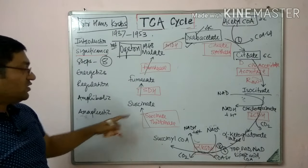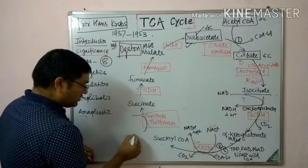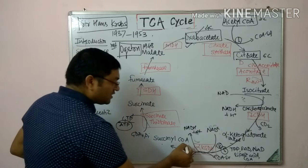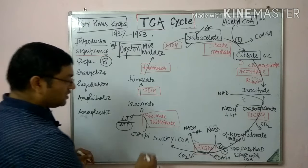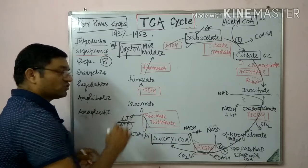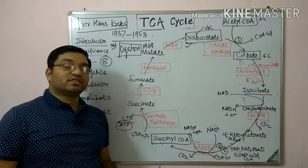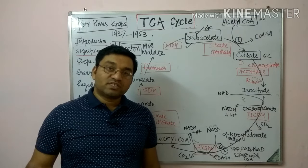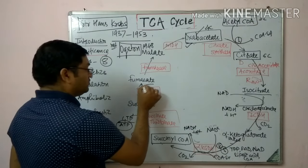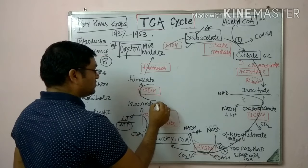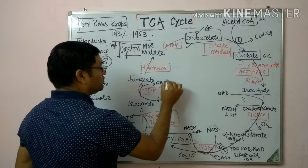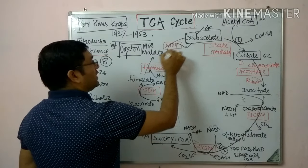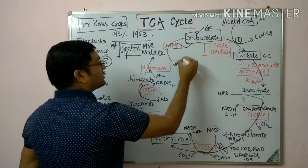Succinyl CoA is converted into succinate. In this reaction, GDP is converted into GTP, which ultimately gives ATP. Succinyl CoA is a high-energy compound, and from this compound there is direct production of ATP — this is known as substrate level phosphorylation by succinate thiokinase. Substrate level phosphorylation means synthesis of ATP without undergoing the electron transport chain. Then succinate is converted into fumarate by succinate dehydrogenase, where FAD is converted into FADH2.